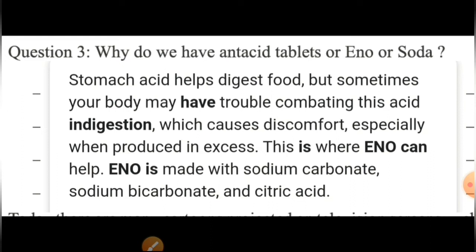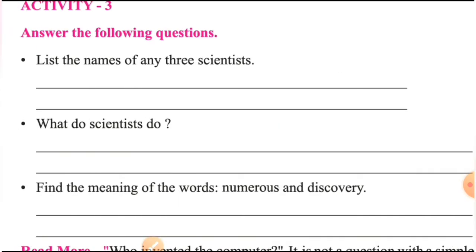यह था Activity 5 के तीन question answers। इस activity में अगर कोई problem है या समझ में नहीं आया तो आप comment box में comment लिख सकते हैं। अभी हम देखेंगे Activity 3। इसके तीन questions हैं: पहला — list the name of any three scientists; दूसरा — what do scientists do; तीसरा — find the meaning of words 'numerous' and 'discovery'।